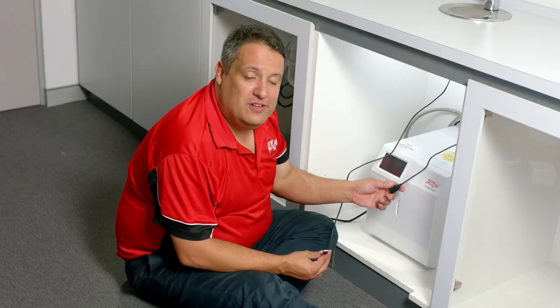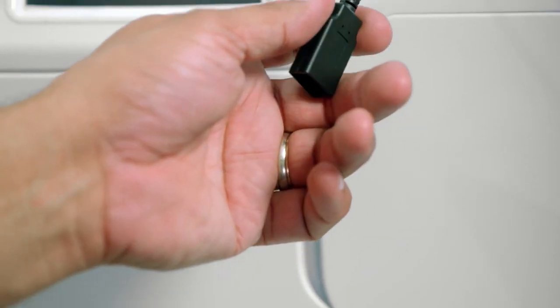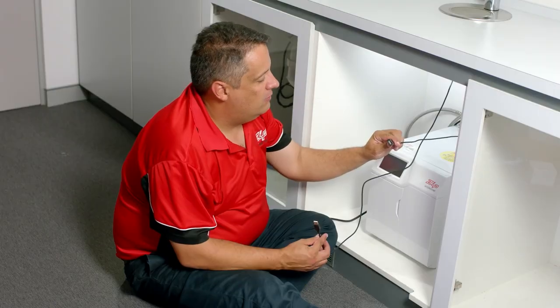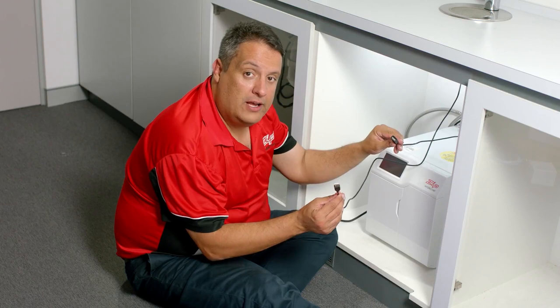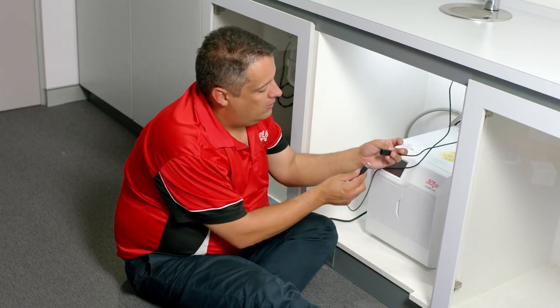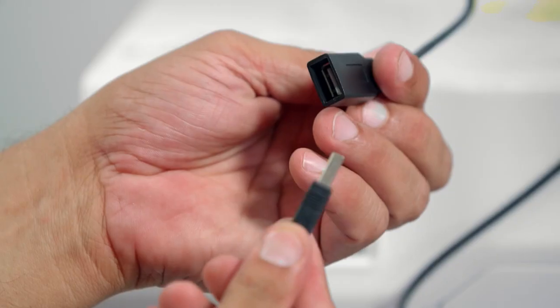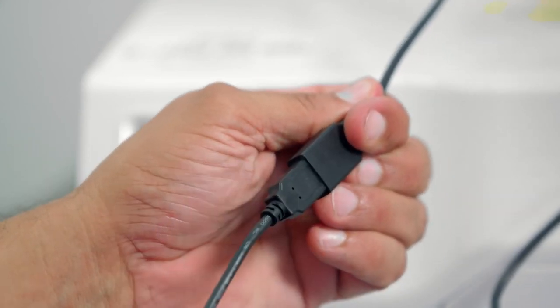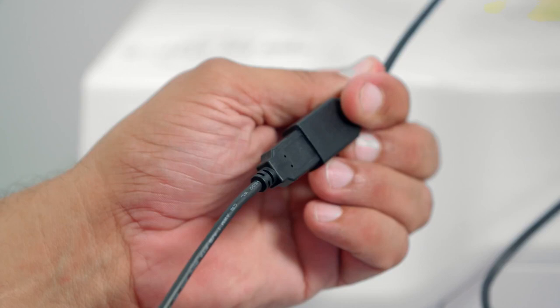Once the water connection has been made, you need to connect the USB cable. There's a female connection from the unit and a male connection from the tap. Orientate them correctly and clip them together. You should hear a loud click when they are connected correctly.